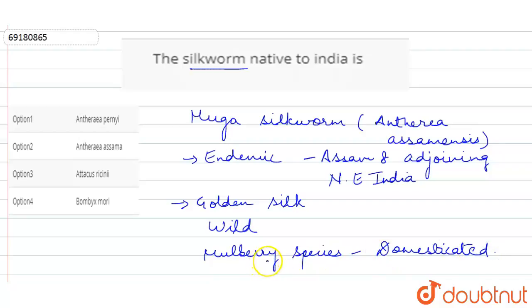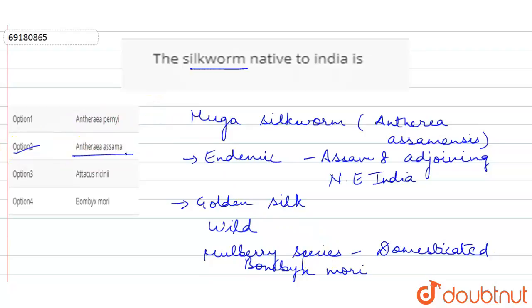The mulberry species is Bombyx mori. They are domesticated, and Bombyx mori produces the very famous mulberry silk.